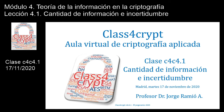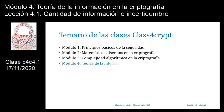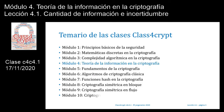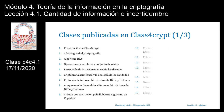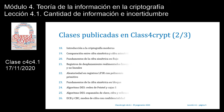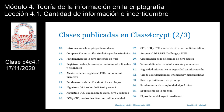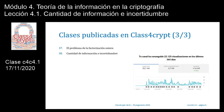Bienvenidos a Class4Crypt, tu aula virtual de criptografía aplicada. Clase número 4.1: Cantidad de información e incertidumbre. Esta clase pertenece al módulo 4 dedicado a la teoría de la información en la criptografía. Te muestro los títulos de las 38 lecciones ya publicadas en este canal, con un total de 22.125 visualizaciones a fecha de hoy, 17 de noviembre de 2020.